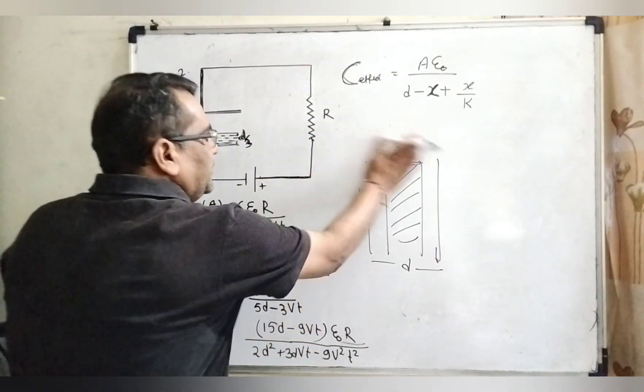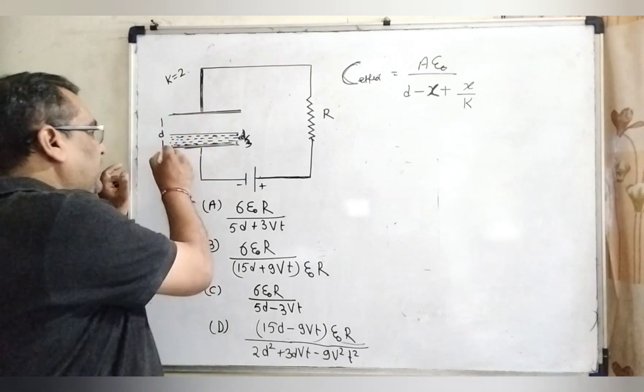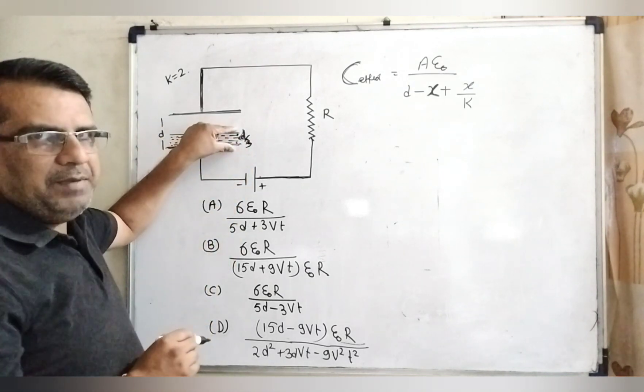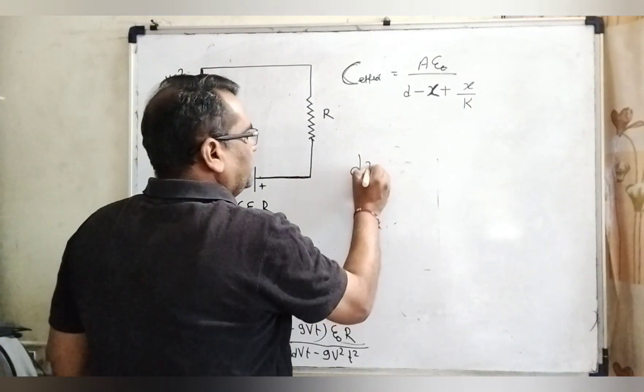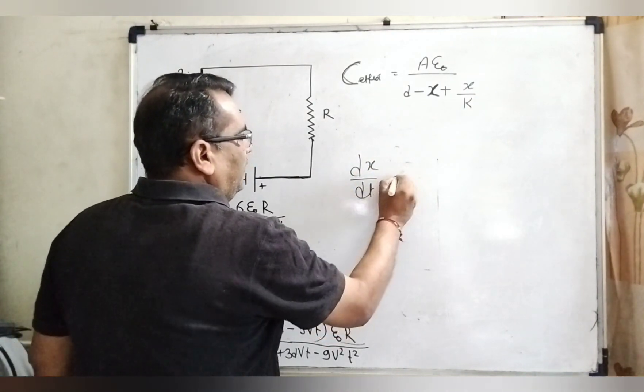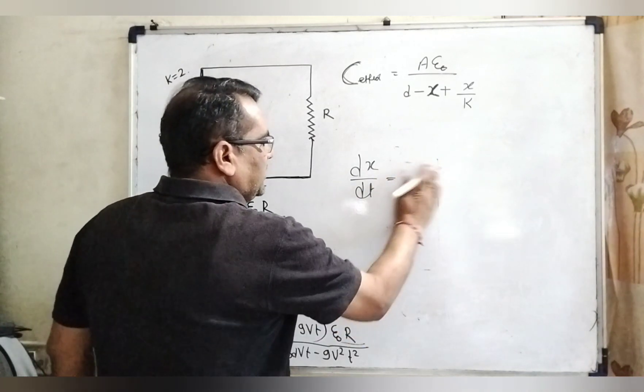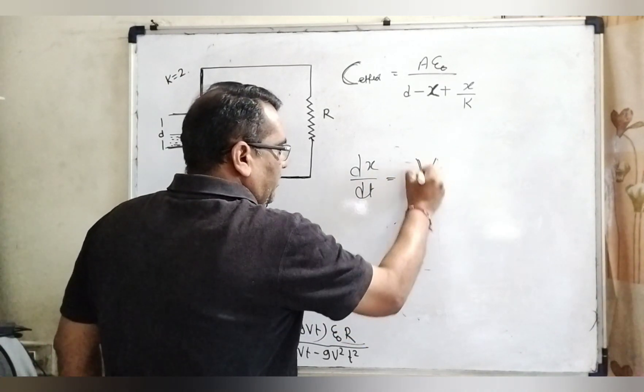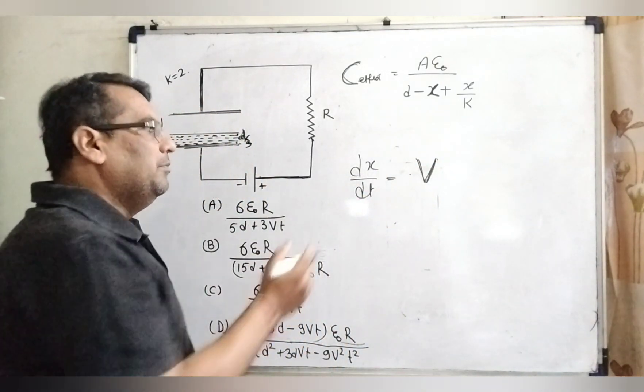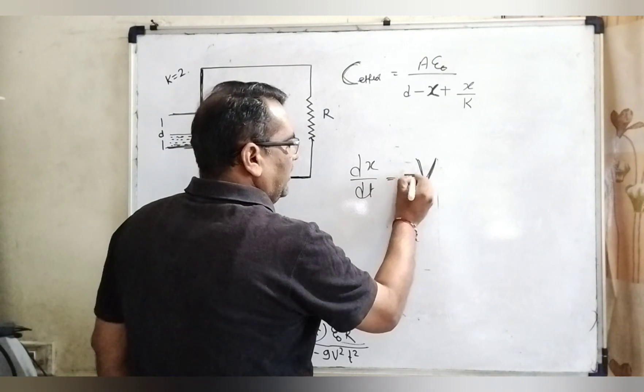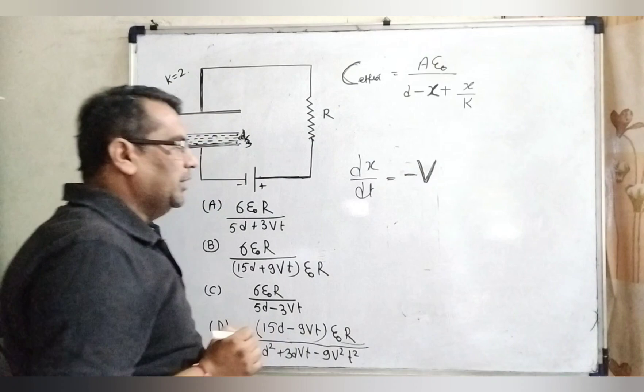And now we have given some liquid filled up. Initially it is from the first plate, its height is d by 3. After, it decreases at the rate of velocity V. Here velocity is given notation capital V in the question. Generally we have written small letter, but here in the question is given capital V to make confusion.